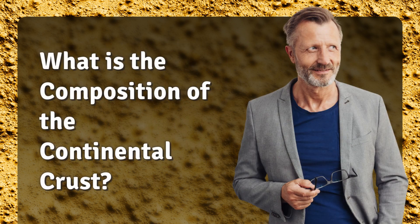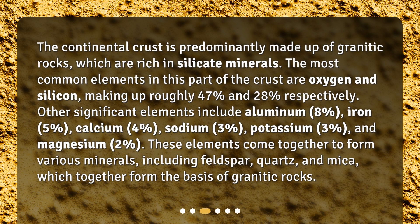The continental crust is predominantly made up of granitic rocks, which are rich in silicate minerals. The most common elements in this part of the crust are oxygen and silicon, making up roughly 47% and 28% respectively. Other significant elements include aluminum at 8%, iron at 5%, calcium at 4%, sodium at 3%, potassium at 3%, and magnesium at 2%.